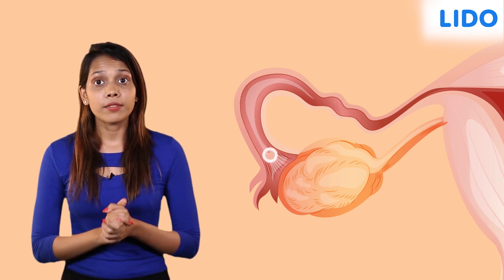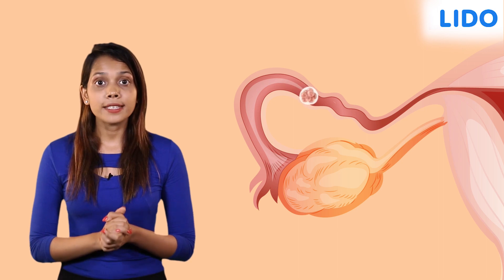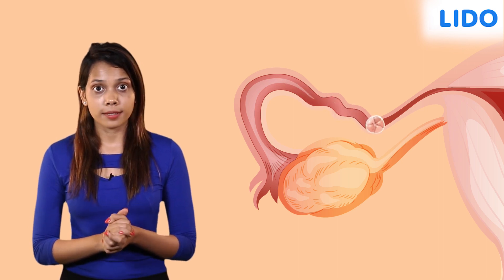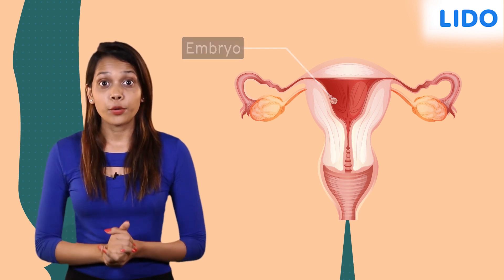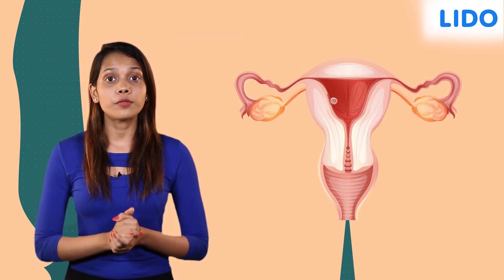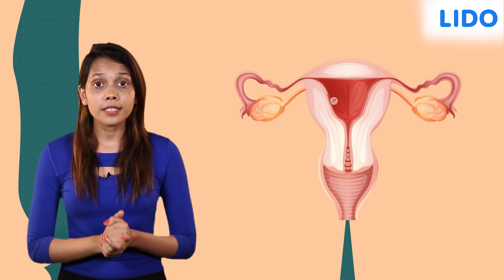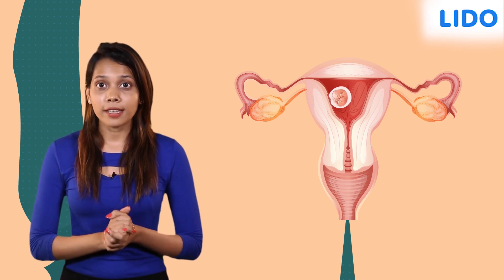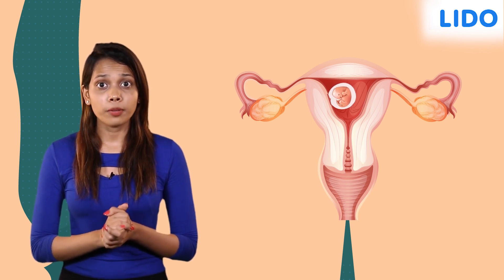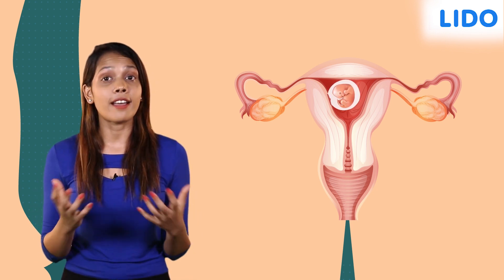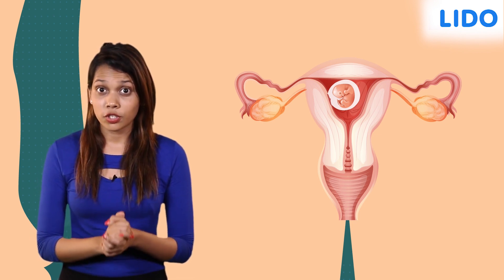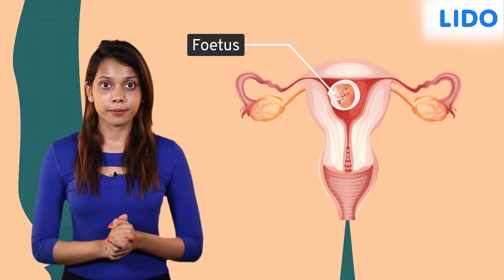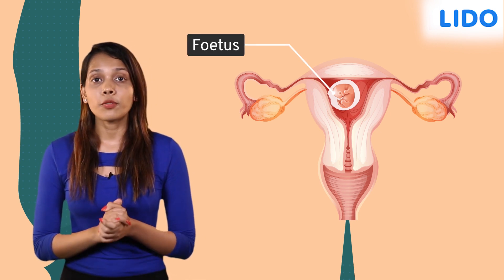The zygote divides repeatedly to form a ball of cells which later develops into tissues and organs. This developing structure is called an embryo. The embryo reaches the uterus and gets embedded in the walls of the uterus. The embryo continues to develop in the uterus and gradually develops into various parts of the body like the head, hands, legs, and other organs. This stage of the embryo where we can clearly distinguish the various parts of the body is called a fetus. When the development of the fetus is complete, the mother gives birth to the baby.